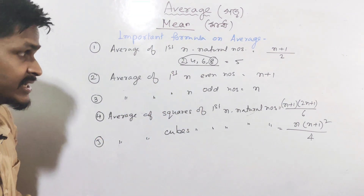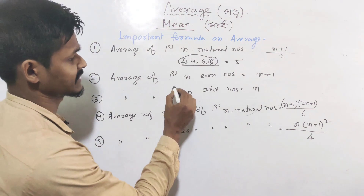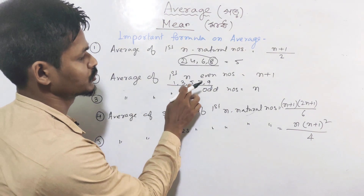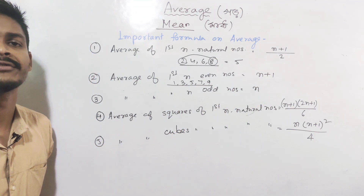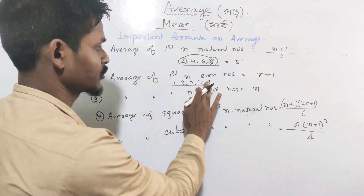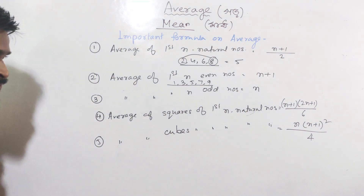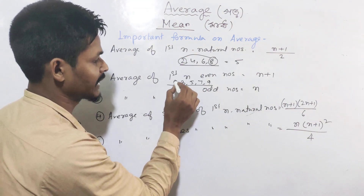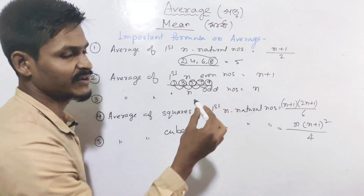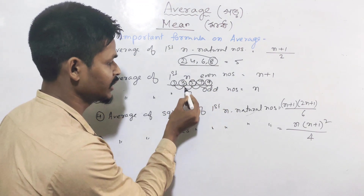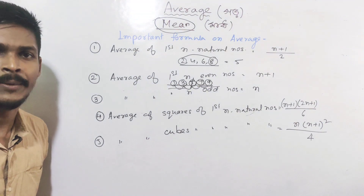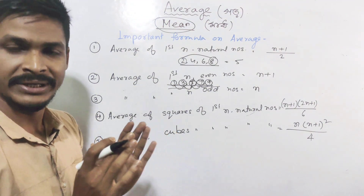The formula for average of first n even numbers equals n plus 1. For odd numbers — 1, 3, 5, 7, 9 — how many numbers are there? Five. The average of first 5 odd numbers equals the middle number, which is 5. Middle point is the average. If you have an even count, average is between two middle values, for example between 3 and 5 giving 4.